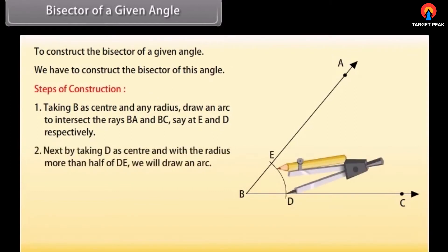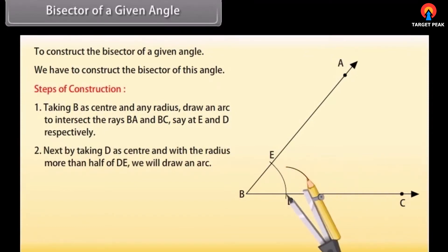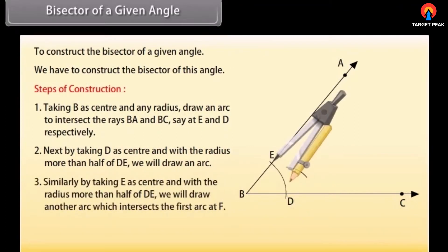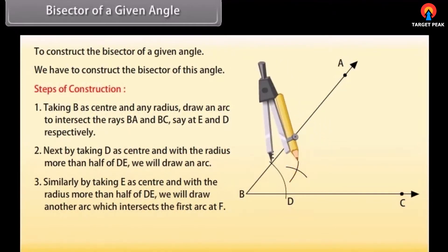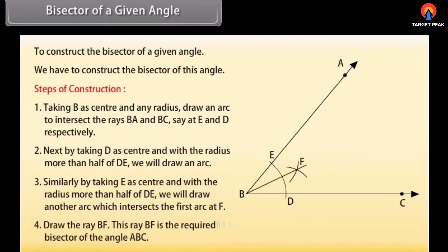First of all, taking B as centre and any radius, we will draw an arc to intersect the rays BA and BC, say at E and D respectively. Next, by taking D as centre and with the radius more than half of DE, we will draw an arc which intersects the first arc at F.